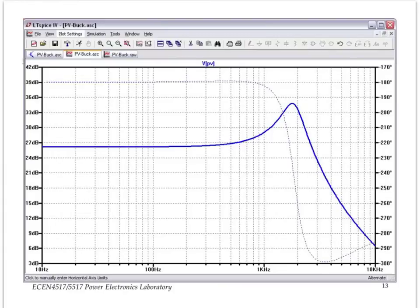LTSpice will display the magnitude response in decibels, that's the blue curve right here, as a function of frequency on a logarithmic scale, and will also display the phase response in degrees, of course, again, as a function of frequency. So, just a quick example to illustrate the capabilities of using the average model to find the frequency responses.